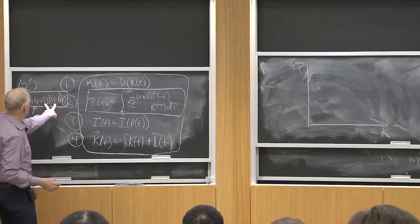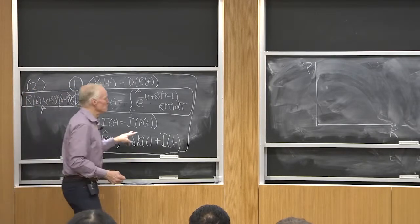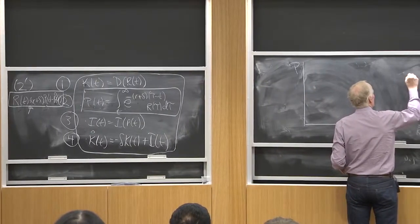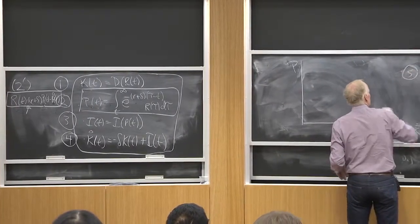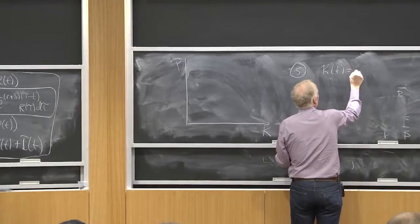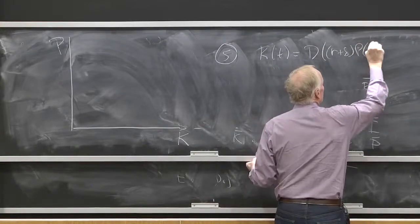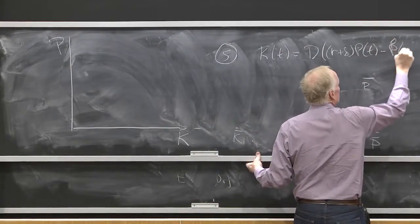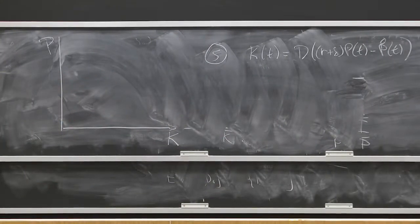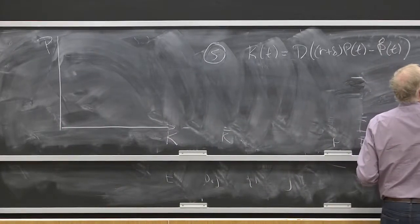So if I put k and p, how do I do that? Well, I'm going to substitute this equation into here. I'm going to substitute in terms of r. So I'm going to have two equations. Let me call equation 5. My first equation, equation 5, is going to be k of t equals d of r plus delta p of t minus p dot of t. That's my one equation. That combines 1 and 2 prime. I've used 1 and 2 prime now.